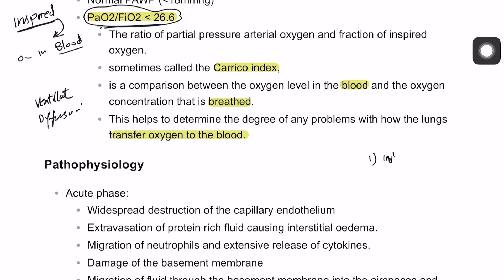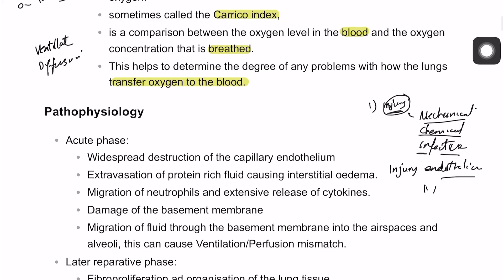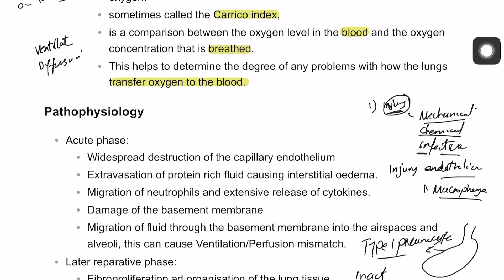First, the lung is exposed to an injury — this could be mechanical injury, chemical injury, or infective injury, such as severe pneumonia, COVID virus, inhalational injury, or trauma. After this injury, there is damage to the endothelium — the capillaries inside the lung. That leads to release of multiple macrophages and polymorphonuclear leukocytes, which migrate inside the alveoli, leading to damage of type 1 pneumocytes.